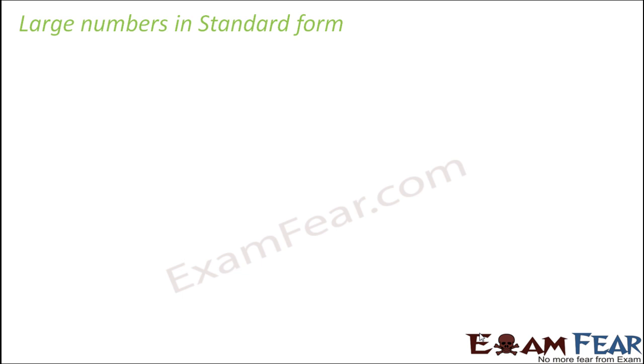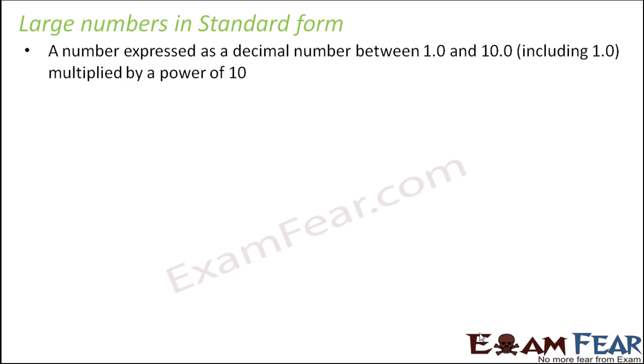Now let's see how we write very large and very small numbers in standard form. You have already learned about writing a large number in standard form. We express the number as a decimal number between 1 and 10, and then multiply it by a power of 10.